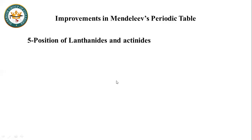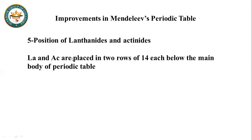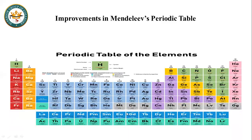The fifth improvement is the position of lanthanides and actinides. The modern periodic table gives lanthanides and actinides a proper place. These are placed as two separate rows: lanthanides run from lanthanum to lutetium (14 elements), and actinides start from actinium — these 14-element rows are placed below the main periodic table. The third year students study this in Mendeleev's periodic table as improved by Moseley.